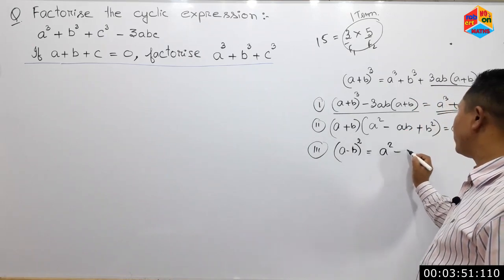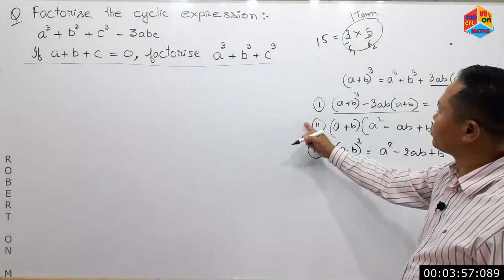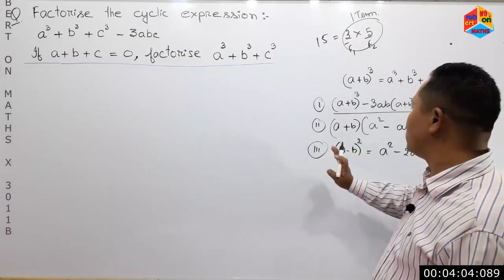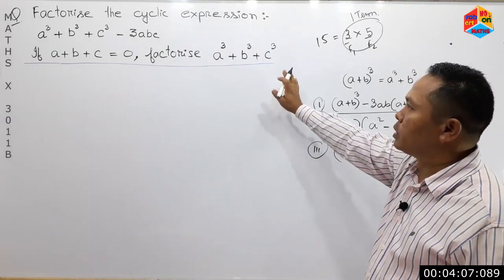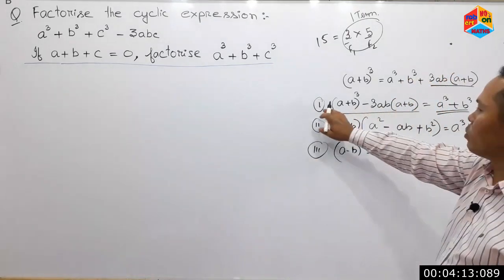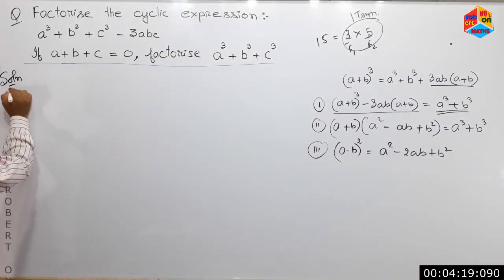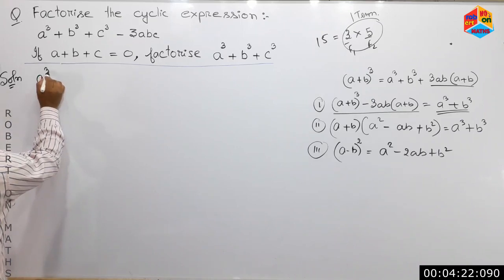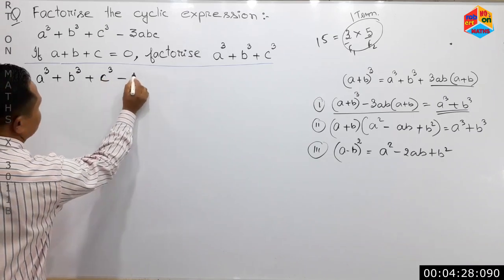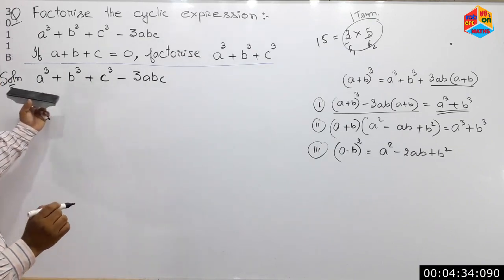This is the formula for a minus b whole square. A square minus twice ab plus b square. This is the formula for a minus b square. This is the formula for a minus c cube plus a minus ab, c minus c.